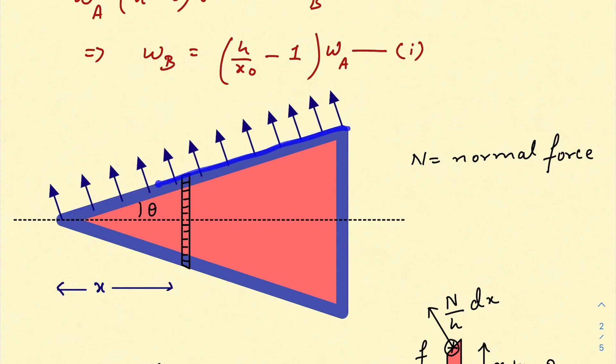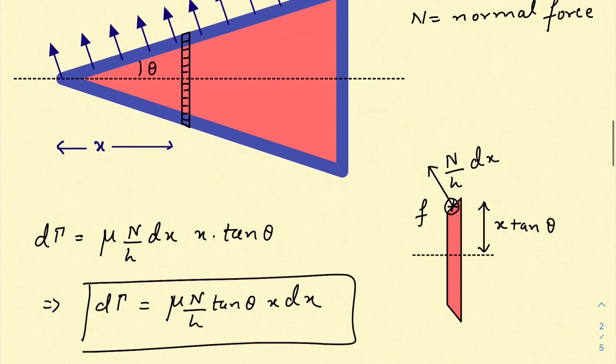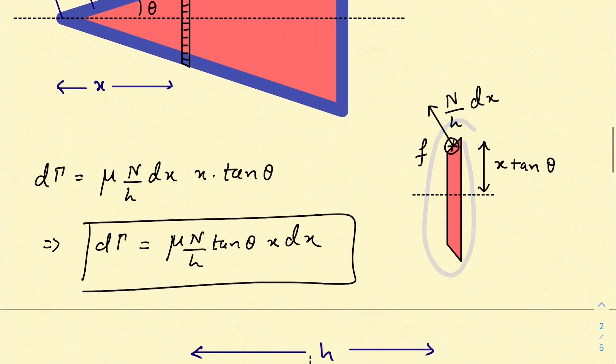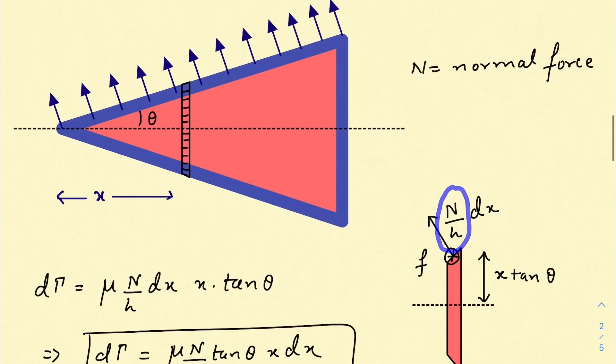And I have considered that the normal force is uniformly distributed over this slant length. I have taken a small disc at a distance x from this vertex. I have drawn the free body diagram of that particular infinitesimally small disc. So the normal that is being applied on this surface, on this portion of the disc, is due to cone A, of course.